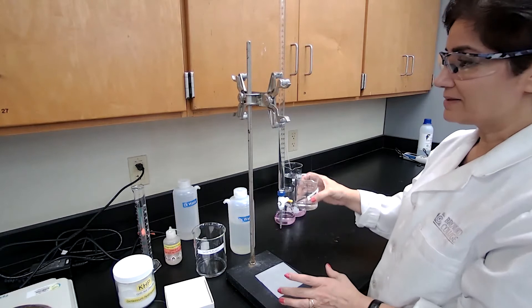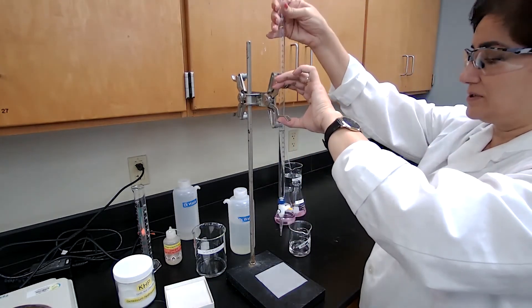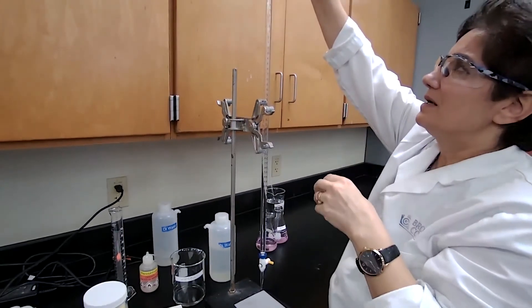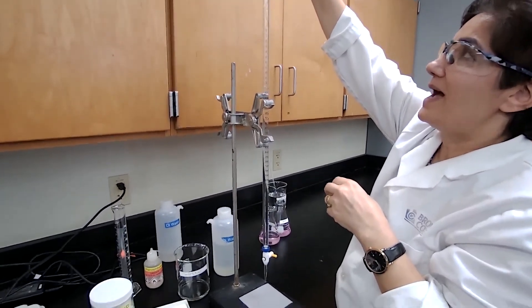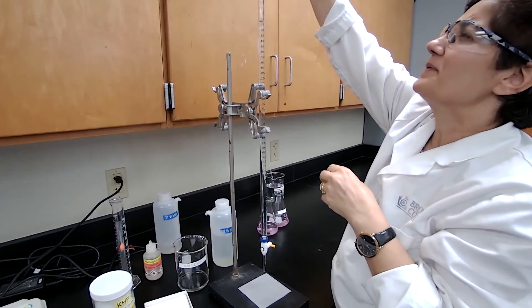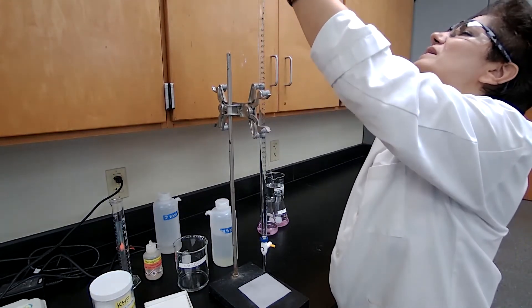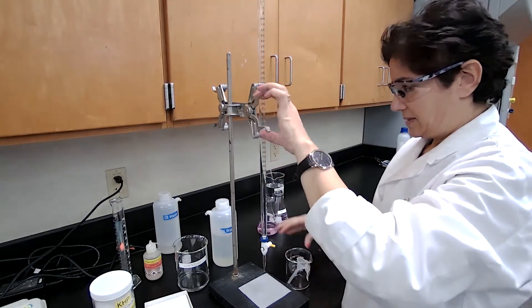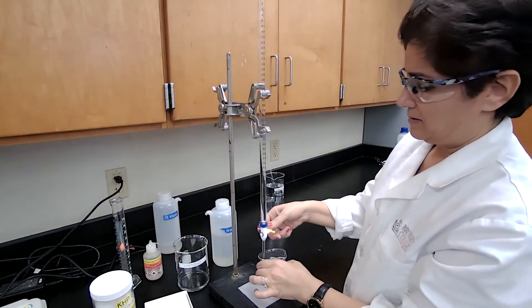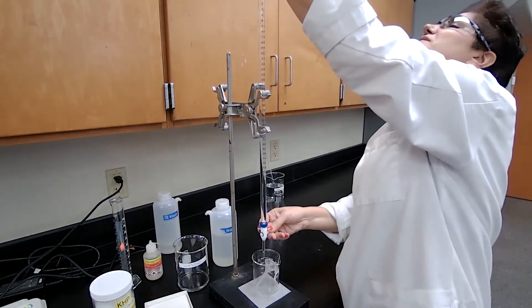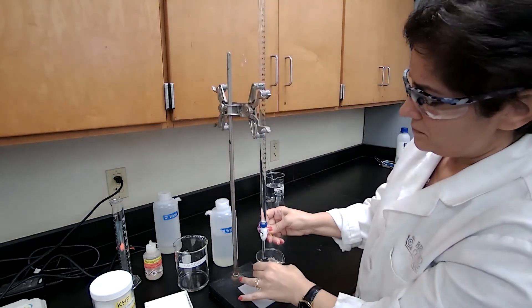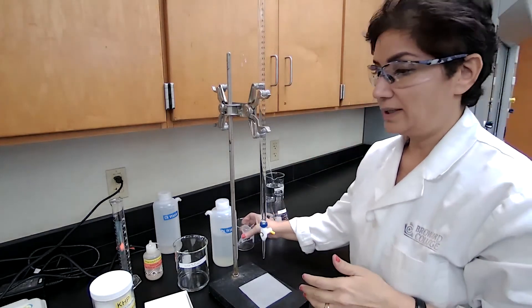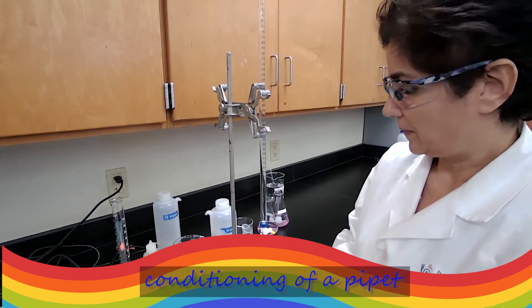Now I can refill the burette with sodium hydroxide, go to zero line, and use it for the next part of the experiment, which is a titration of the weak acid, which we have as acetic acid. So I'm going to take it to zero, adjust the volume at zero, exactly at the 0.00 line.